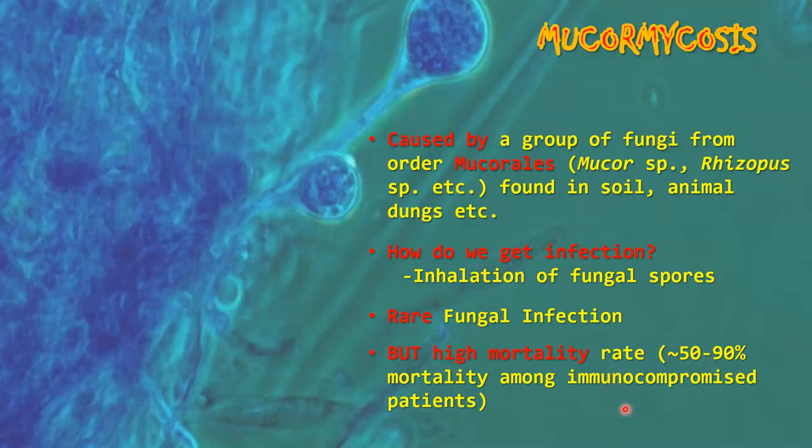What does immunocompromised mean? It means that when the immune system is weak. In normal conditions, every day we inhale thousands or lakhs of fungal or bacterial spores, but our strong immune system can fight against them and destroy those invading pathogens. But when the immune system gets weak — for example, in diseases like diabetes, cancer, or HIV/AIDS infection — or in people going through surgical procedures or organ transplants, the immune system gets weakened. These people are called immunocompromised patients.